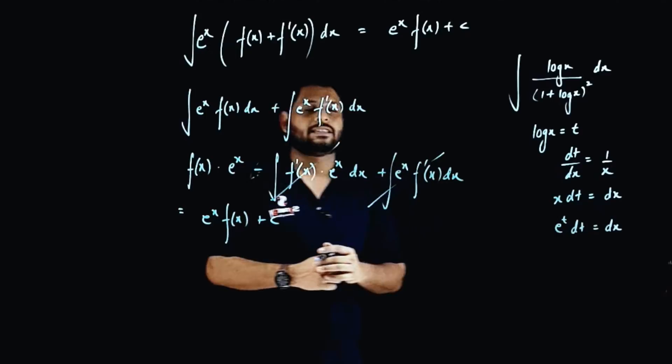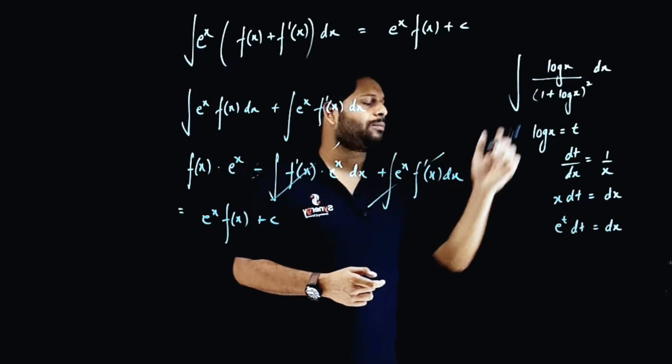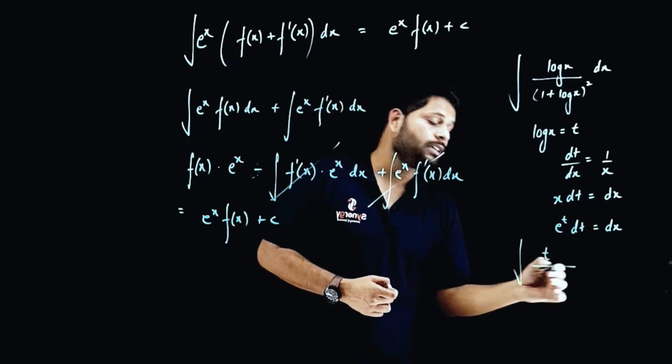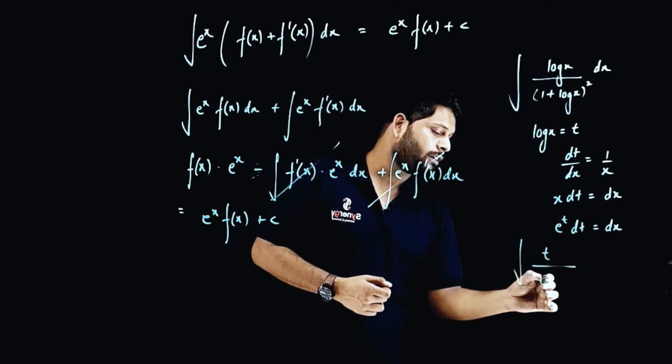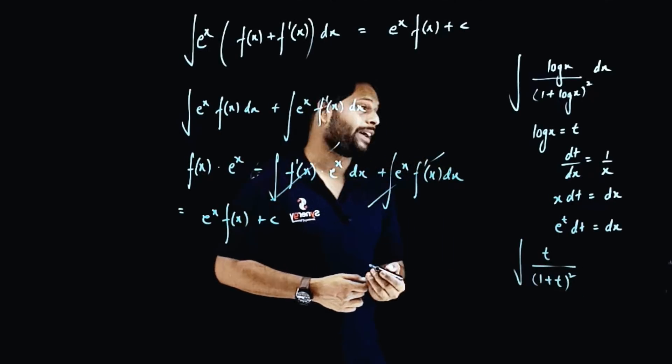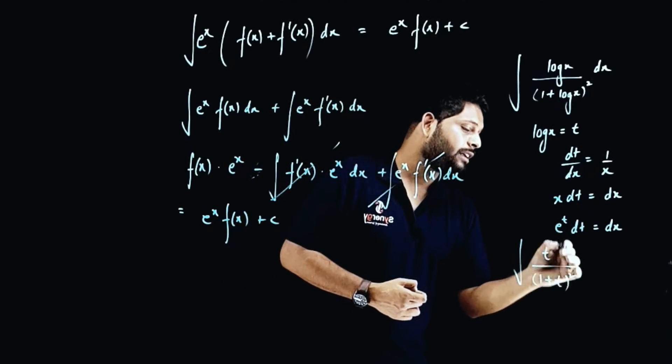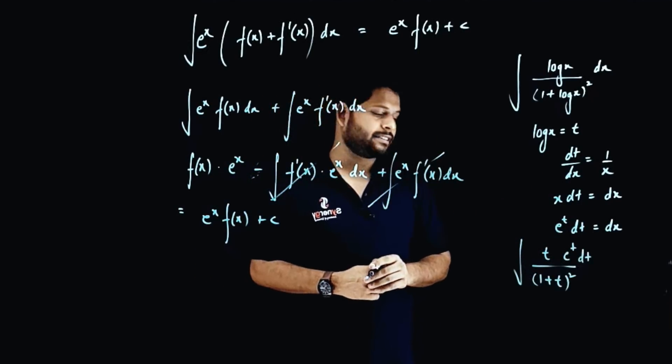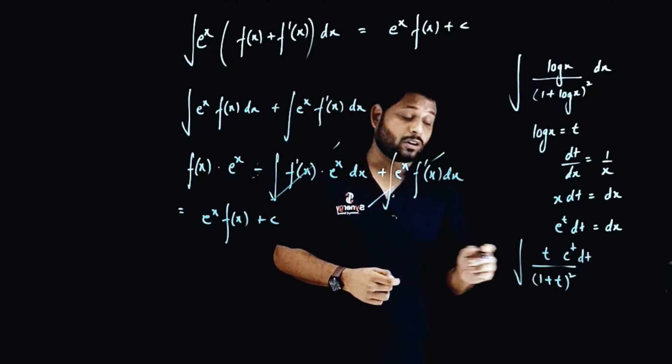So I'm writing the value of the same. If you think about it, it is t/(1+t)^2 and e^t·dt in place of dx.